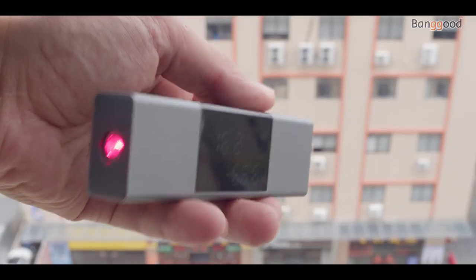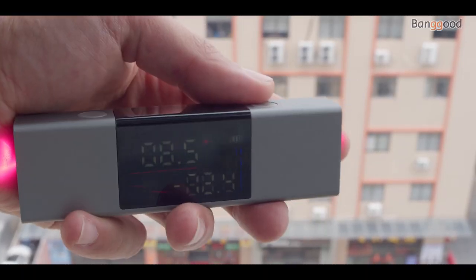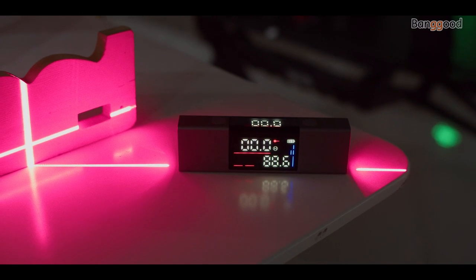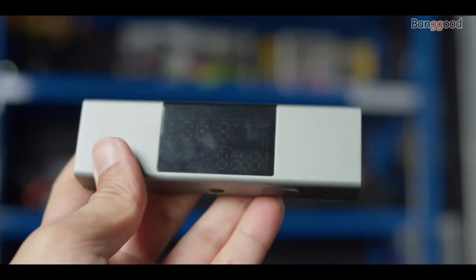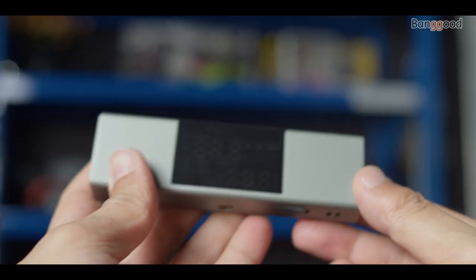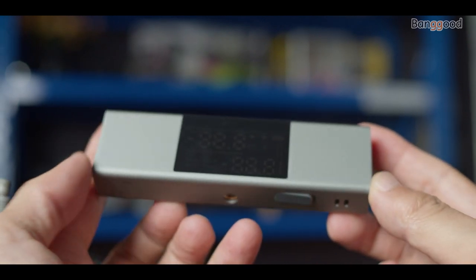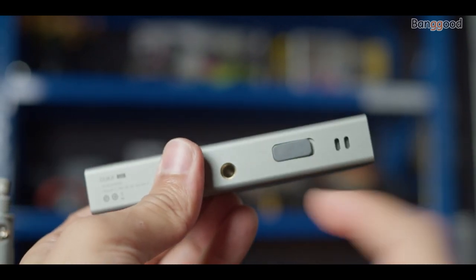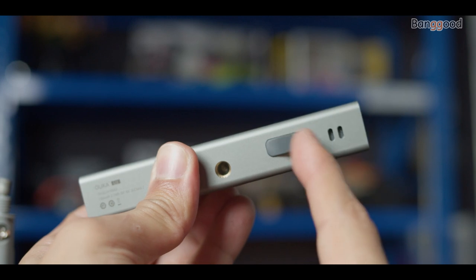The dual display is bright enough to see the numbers in sunlight outdoors or indoors. The power source is a 730 milliampere-hour lithium battery, and it can be charged via Type-C cable from a power bank, USB charger, or even a laptop.